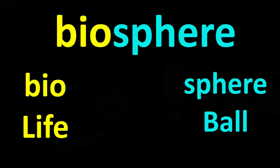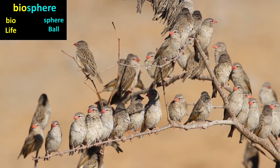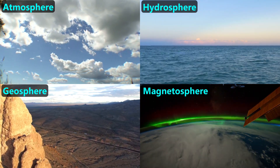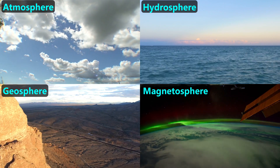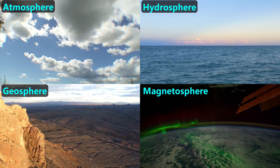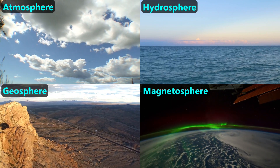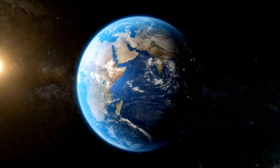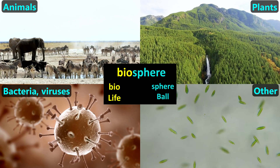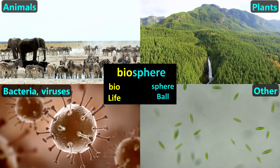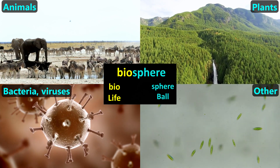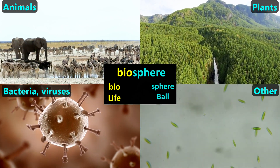The word 'biosphere' is made of two word parts. The second is 'sphere,' which means ball. The biosphere is one of the five major collections on Earth that Earth scientists have defined, together called Earth systems. These other collections include the atmosphere, the hydrosphere, the geosphere, and the magnetosphere — each covering the entire Earth, so we consider them ball-shaped and call them a sphere. The biosphere is the term we use to include all forms of life on Earth, regardless of type and place — that means all animals, plants, bacteria, viruses, and other life forms. Thanks for your attention.